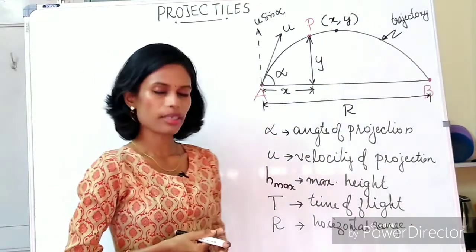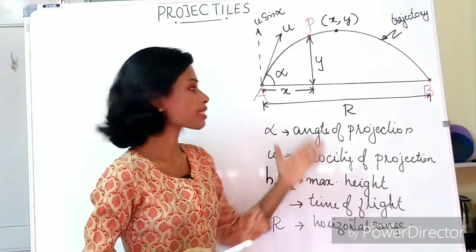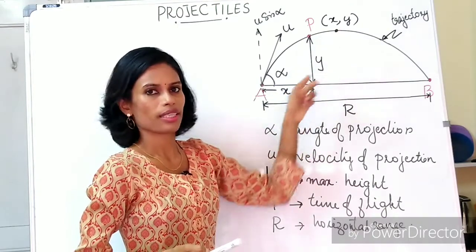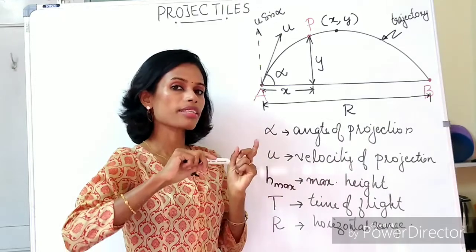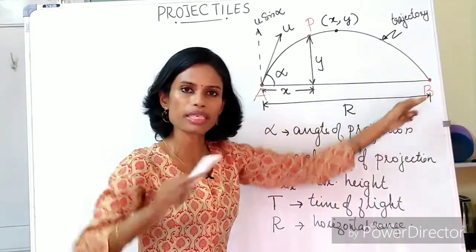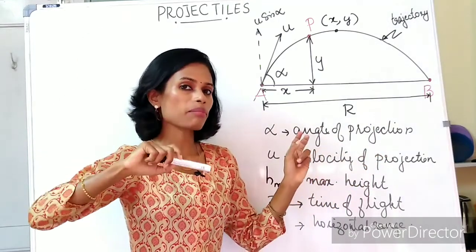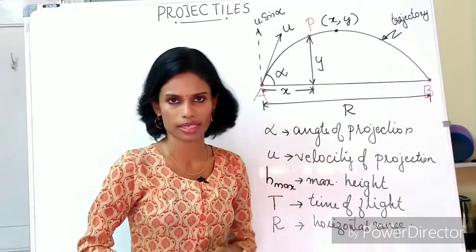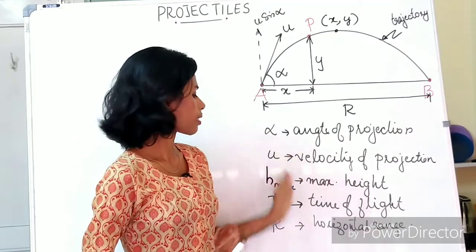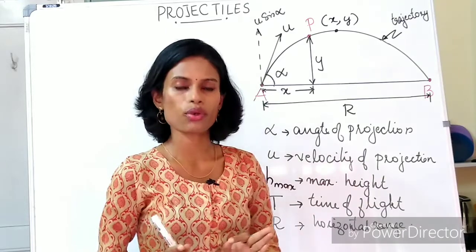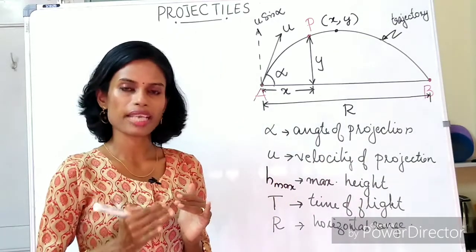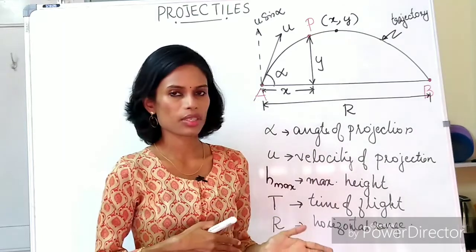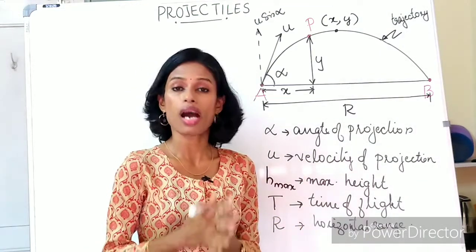There are other important terms: maximum height is the highest point the particle reaches during its trajectory. Time of flight is the time elapsed between the projection from A and hitting the ground at B. These terms have important equations associated with them. I'll derive them one by one, and I suggest you also learn how to derive these equations rather than just memorizing them.